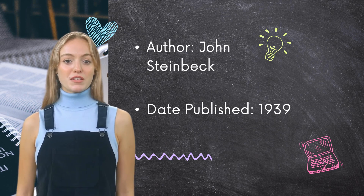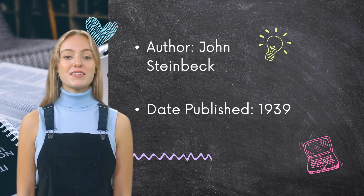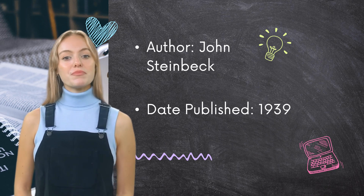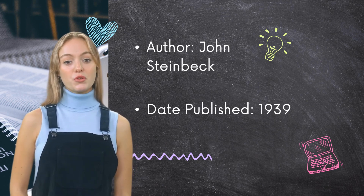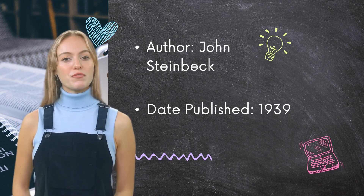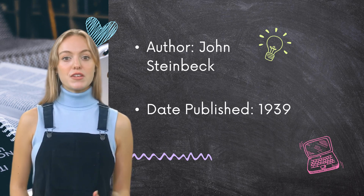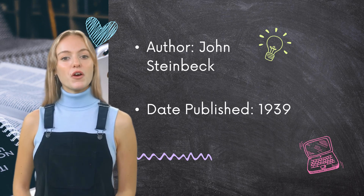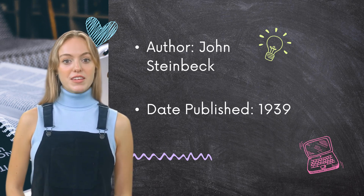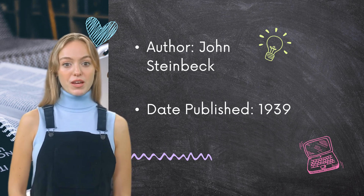Often exploring themes related to social justice and the human condition, his other notable works include East of Eden, Cannery Row, and Travels with Charley in Search of America. Steinbeck was also active in politics and social causes, speaking out against fascism and racism, and supporting the labor movement. He was awarded the Nobel Prize in Literature in 1962. Steinbeck died of heart disease on December 20, 1968, at the age of 66. His legacy as one of America's greatest writers continues to be celebrated and studied today.